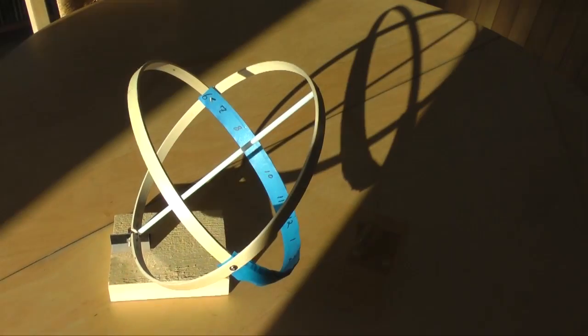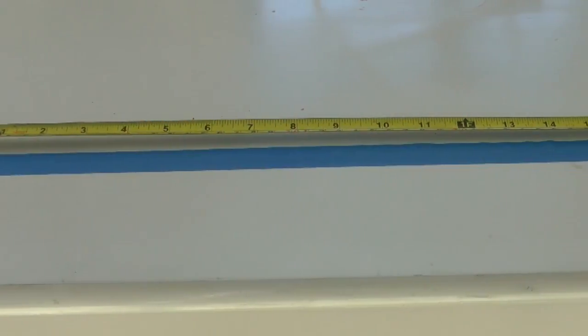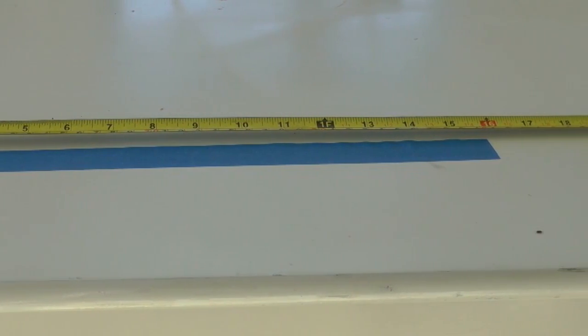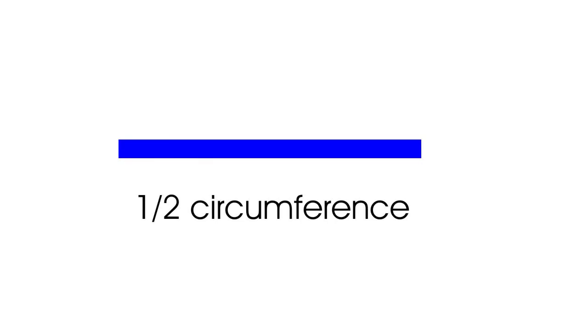We need a scale for our sundial. Lay out a piece of masking tape with a length equal to half the circumference of the smaller hoop. Divide this length by 12.